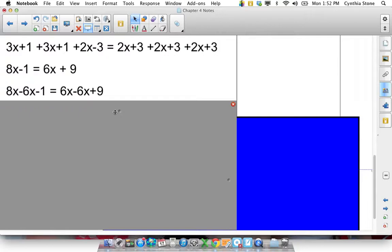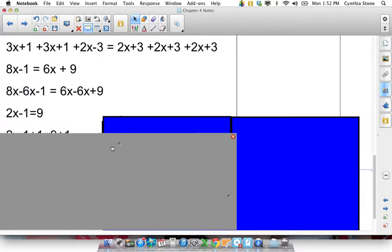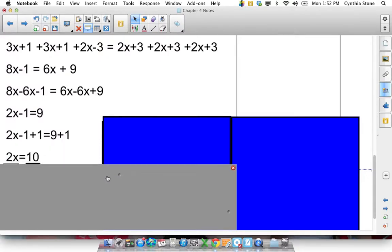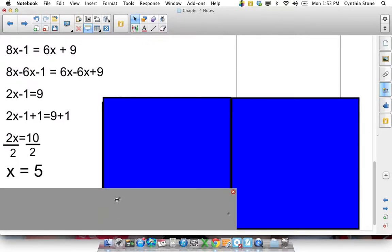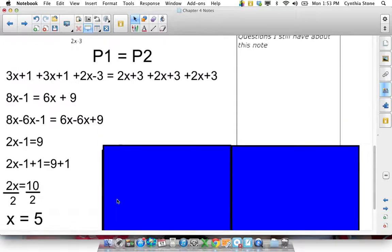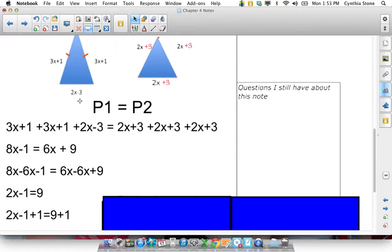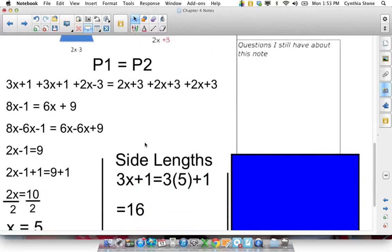So I subtract 6x from both sides. I end up with 2x minus 1 equals 9. Then that leads me to having 2x equals 10. Divide both sides by 2, and I end up with x equals 5. Now, you want to wash your hands and say, okay, problem solved. But the question isn't asking for x. It's asking for the side lengths. So the last step to this question then is taking each of these side lengths and subbing in x equals 5 and seeing what it ends up being.